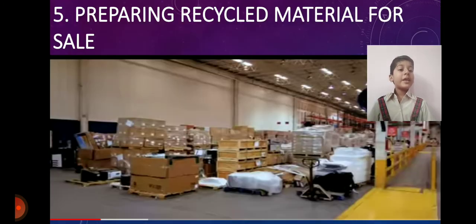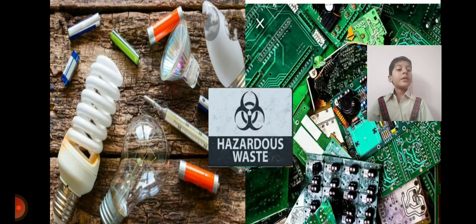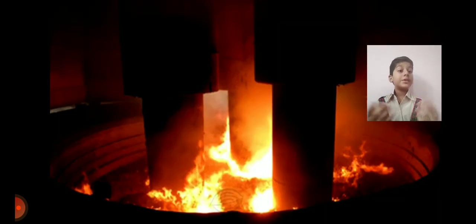The material and metals separated are prepared for sale as raw material for making new products. The hazardous waste, like bulbs, batteries, and circuit boards, are recycled through an incineration process, in which e-waste is destroyed at very high temperature.